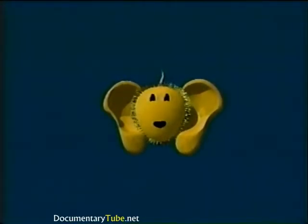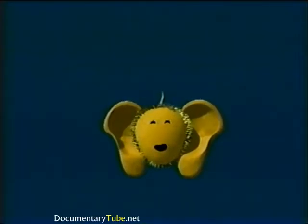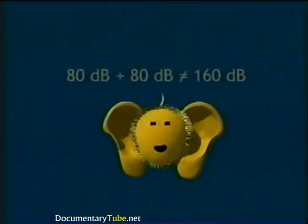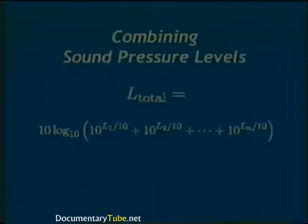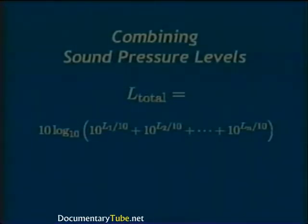The sound pressure level is often represented by a capital L. When combining sound pressure levels, it is not a simple matter of algebraically adding the numbers — 80 dB plus 80 dB does not equal 160 dB. Because the decibel scale is logarithmic, to combine decibel values each must be converted to a linear scale, added, then converted back to a logarithmic scale. Here, L1, L2, up to Ln represent the n sound levels to be combined.